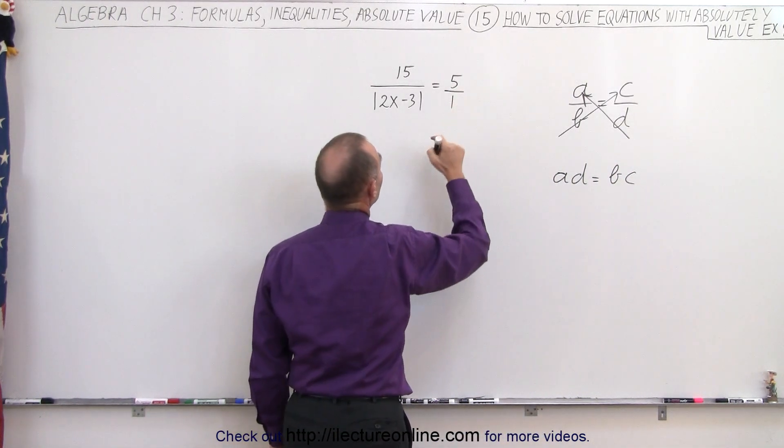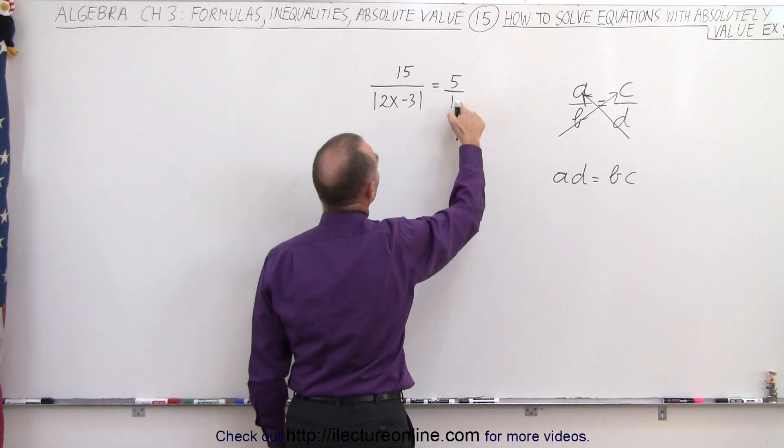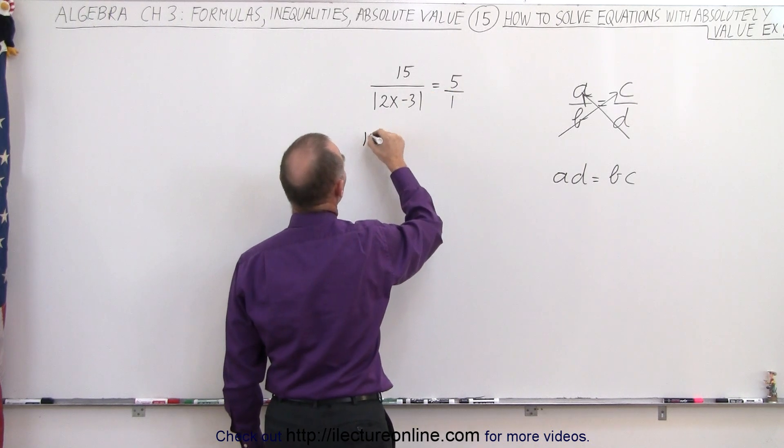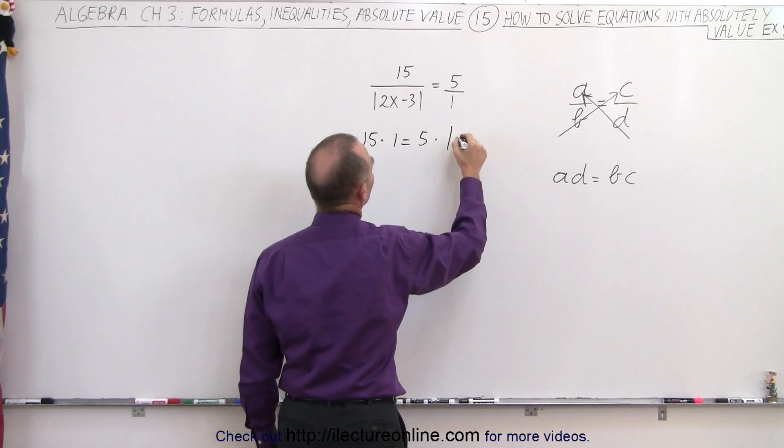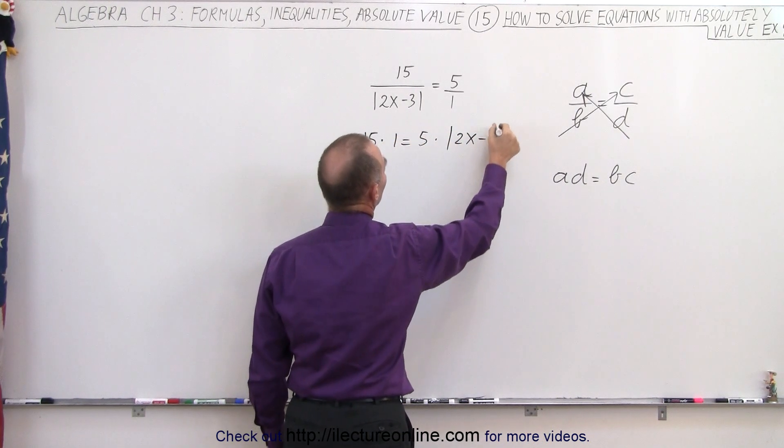Notice we can write this as 5 over 1. We're going to move this over here and this over here, so 15 times 1 is equal to 5 times the absolute value of 2x minus 3.